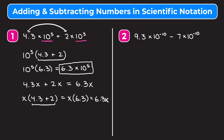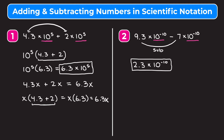So if you're multiplying both numbers by the same power of 10, you can just add or subtract the numbers in front. In example 2, we have 9.3 times 10 to the negative tenth minus 7 times 10 to the negative tenth. Again, we're multiplying 9.3 and 7 by the same thing, so we just subtract: 9.3 minus 7 is 2.3, and we multiply that by our power of 10 to get 2.3 times 10 to the negative tenth.